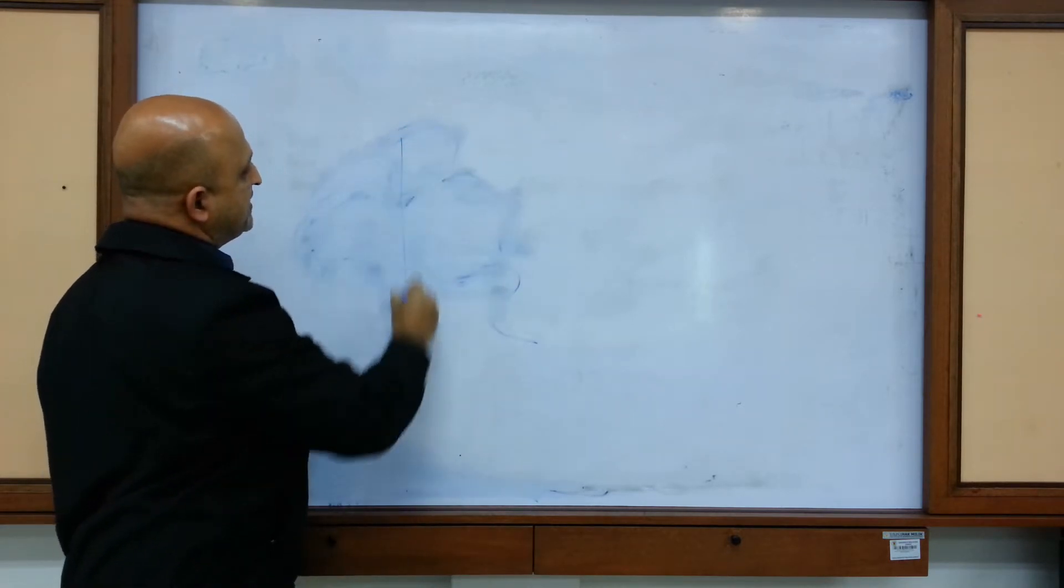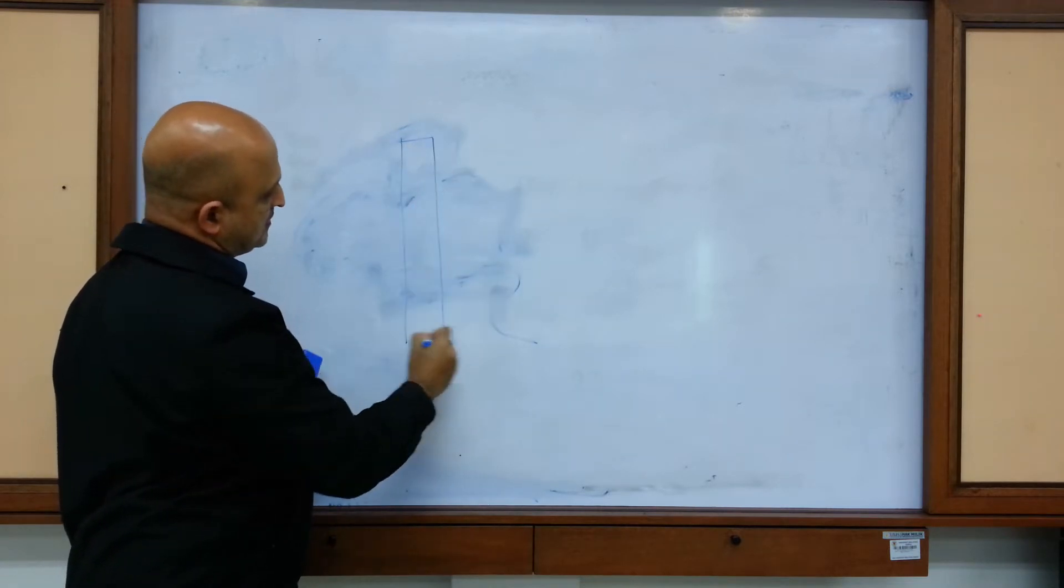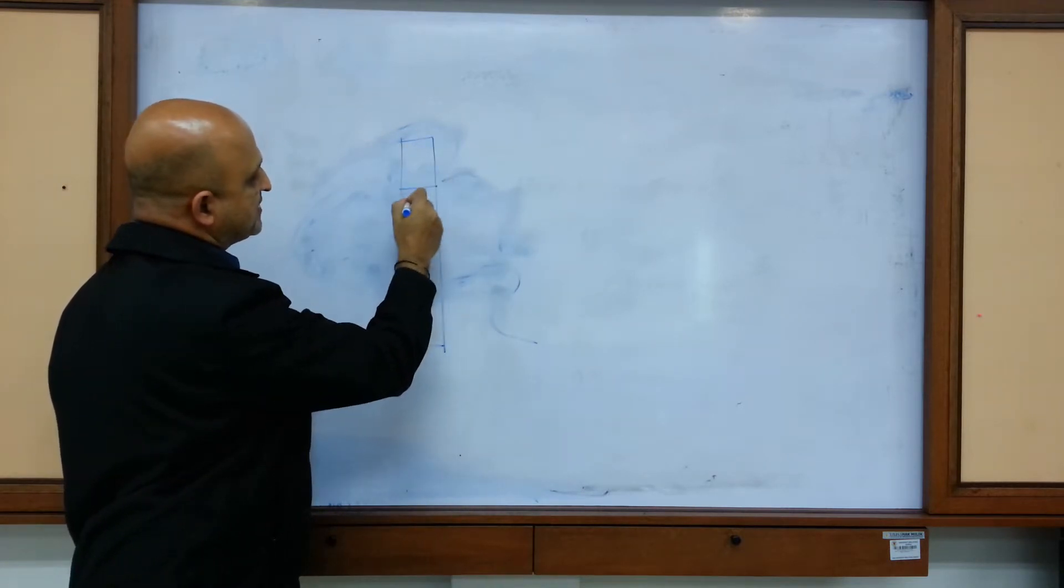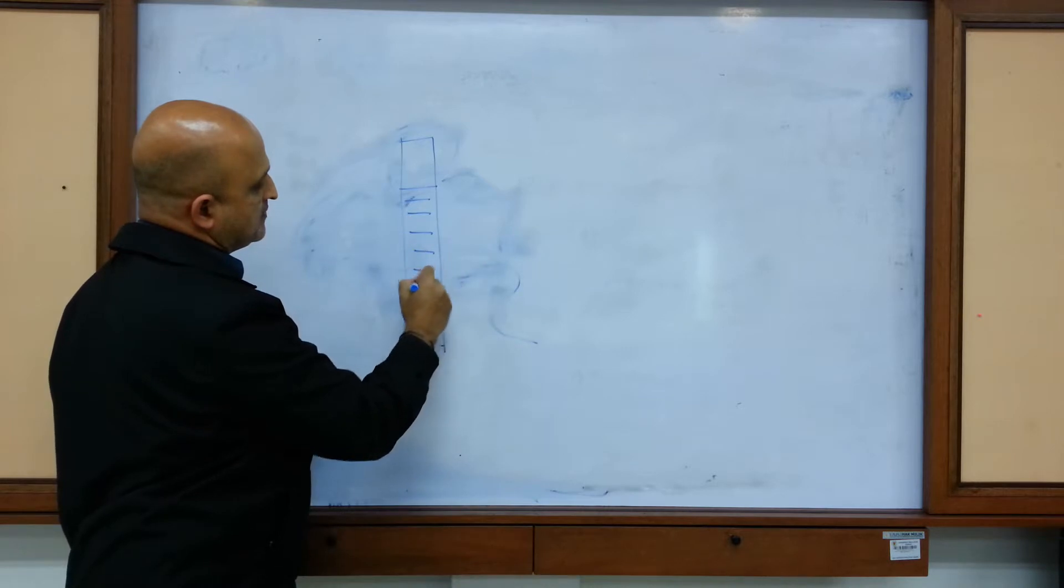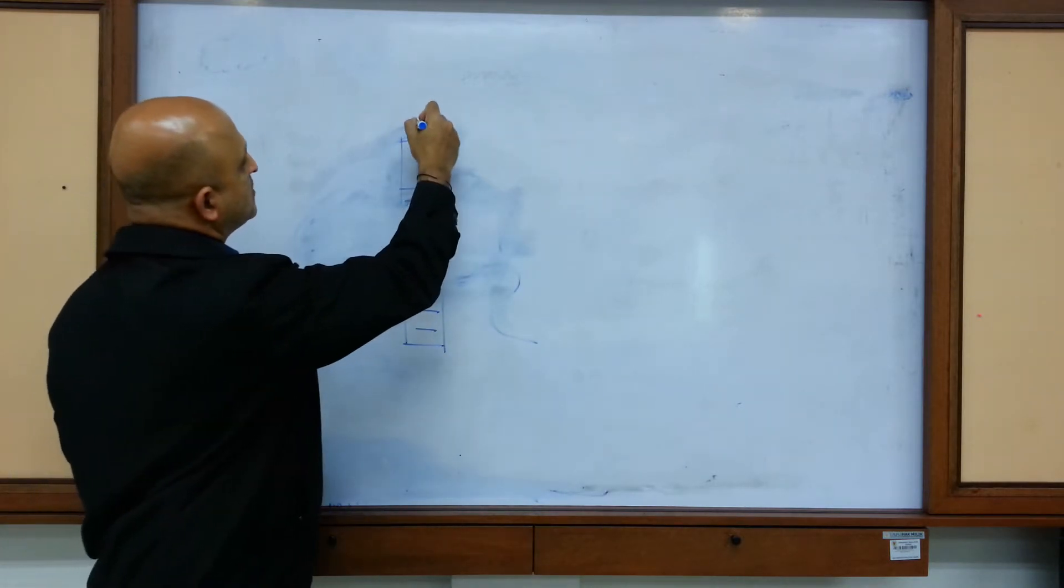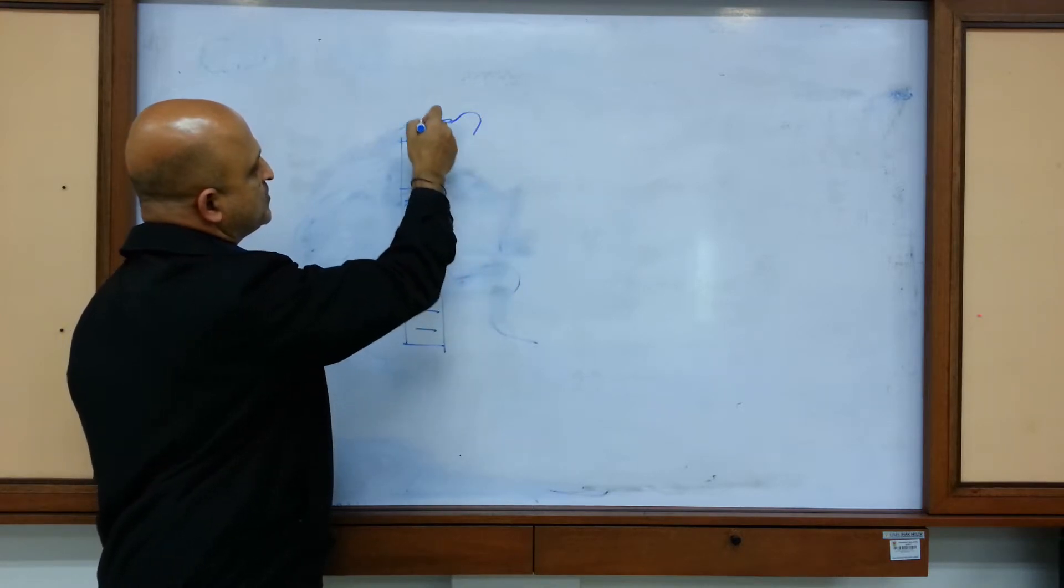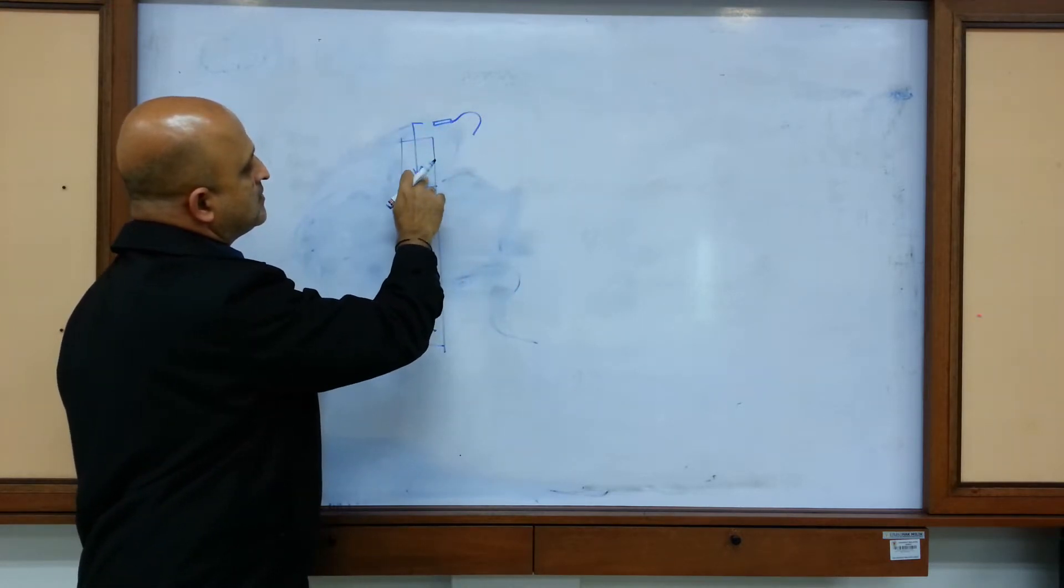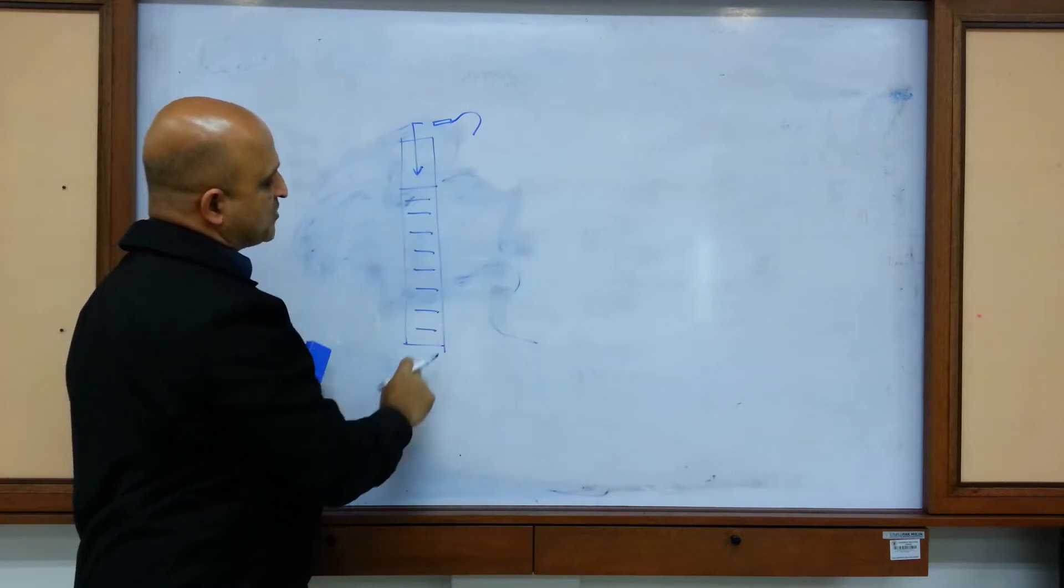The column works based on affinity. An affinity-based column will consist of a matrix which will bind to the tagged proteins only.